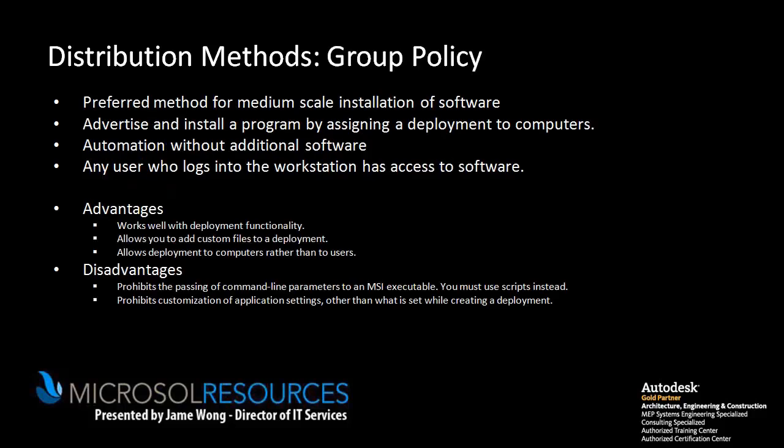Group Policy is the third method and is suitable for many firms, large or small. It is actually my preferred method and is currently in use in our offices. You can apply Group Policy Objects to any OU in your domain and assign software to computers. Upon reboot, the computer will install the software, ensuring everyone has access. This is the preferred method for many firms since it automates the installation process.